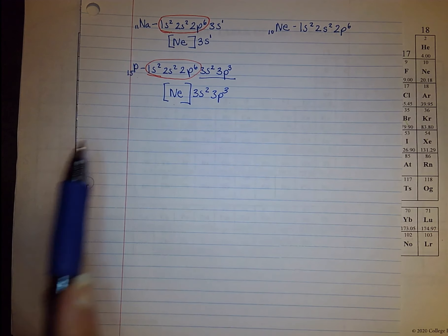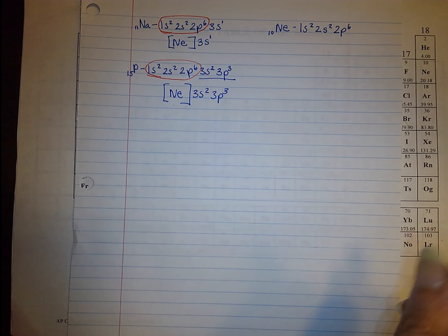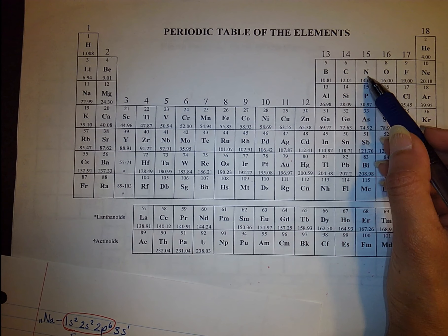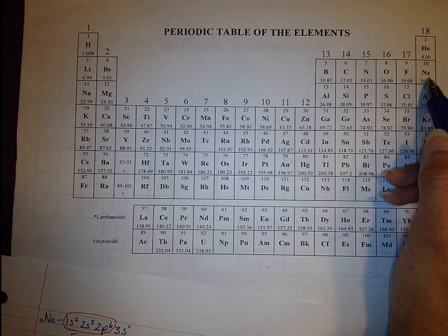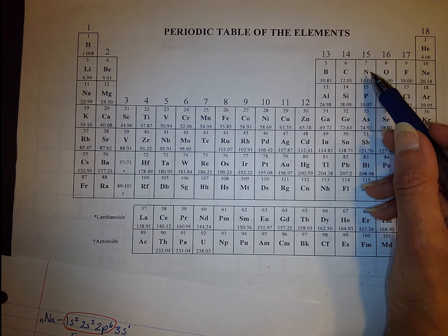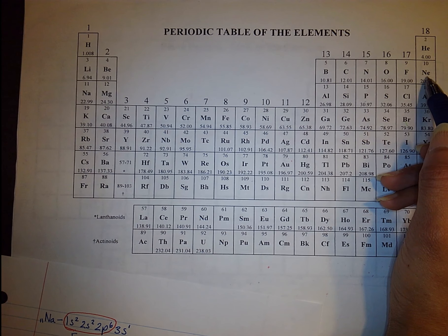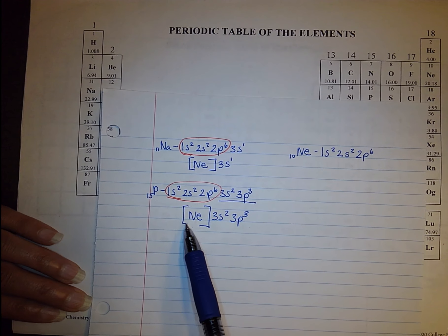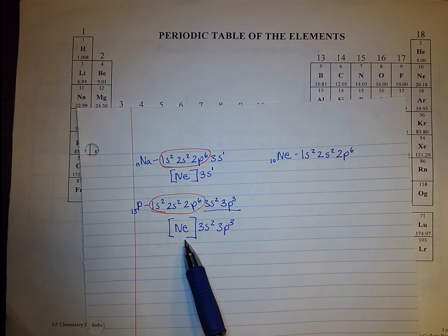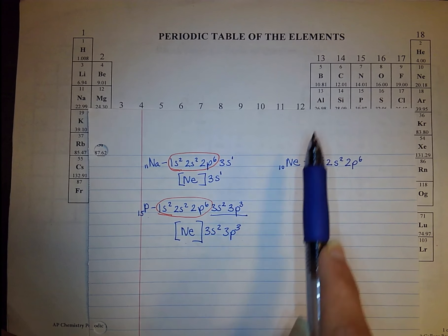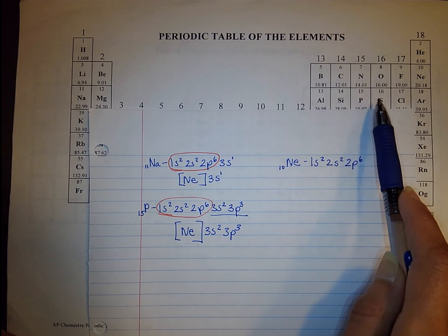What you're doing essentially is looking at the element you have and going one row above on the periodic table to find the noble gas. If we have phosphorus, one row above gives us neon. So we replace with neon in brackets, and then continue with the remaining configuration: 3s2 and 3p3.